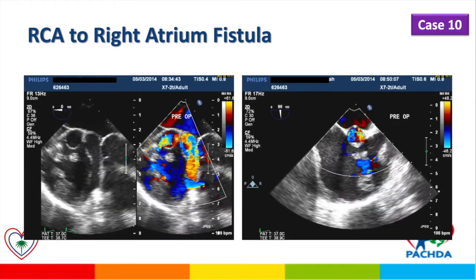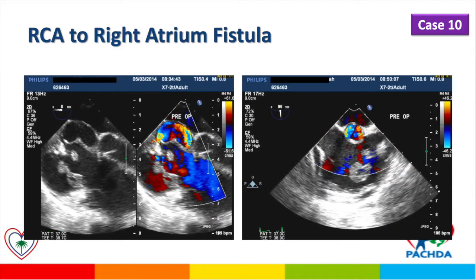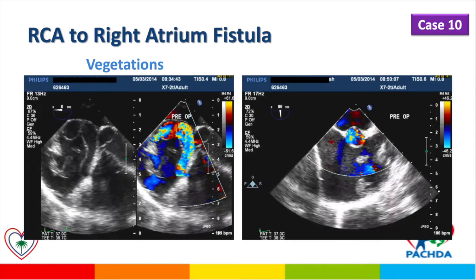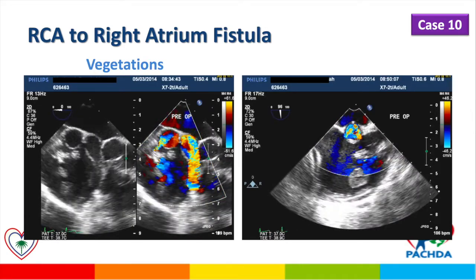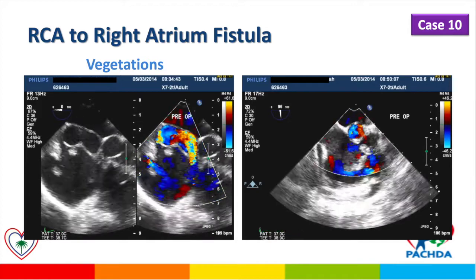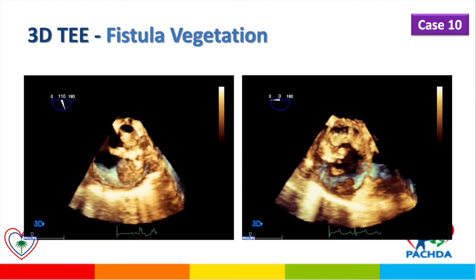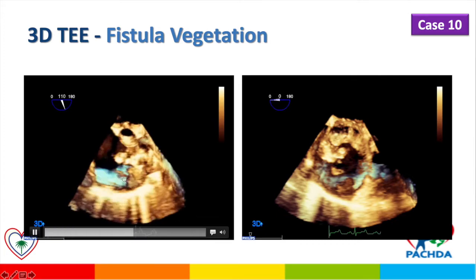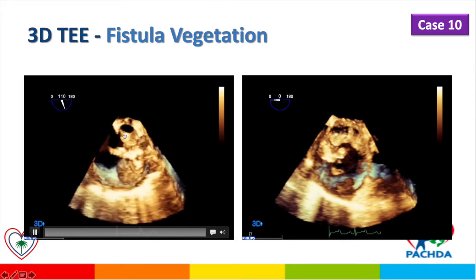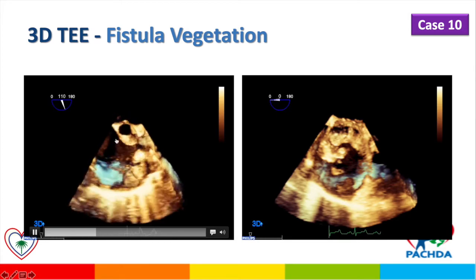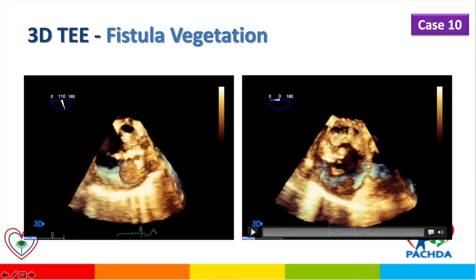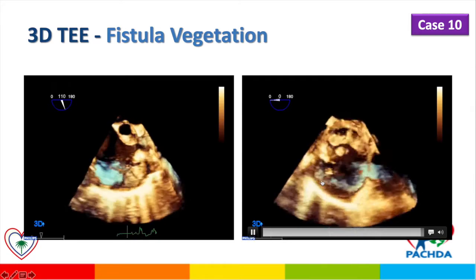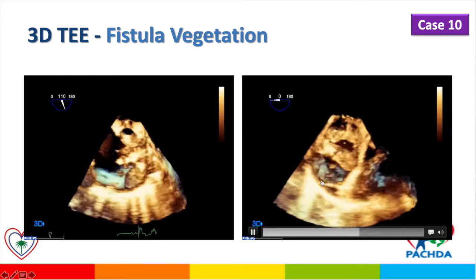At the exit of the fistula into the right atrium and right opposite to it, there are masses which are actually vegetations on the right atrium due to the fistula. So the fistula in this case was not a benign fistula — the patient had endocarditis and required surgical repair and removal of the vegetations. Three-dimensional echocardiography shows a large mass of vegetation, the fistula, and its mouth into the right atrium.